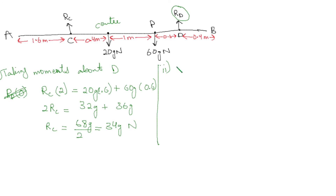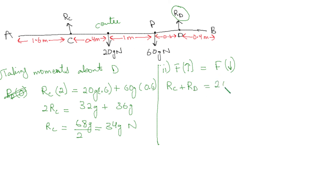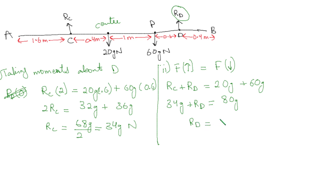The quicker method: since the beam is in equilibrium, upward forces equal downward forces. So RC + RD = 20g + 60g = 80g. We already know RC = 34g, so RD = 80g − 34g = 46g newtons. That's how you solve parts A1 and A2 of question 2.